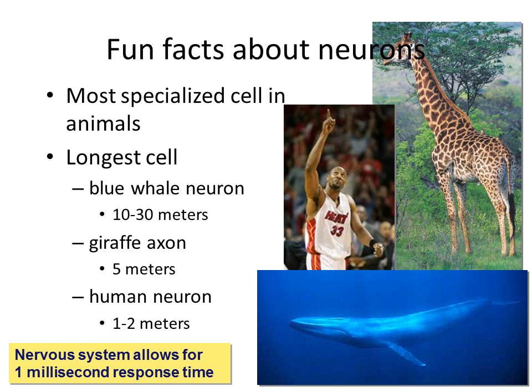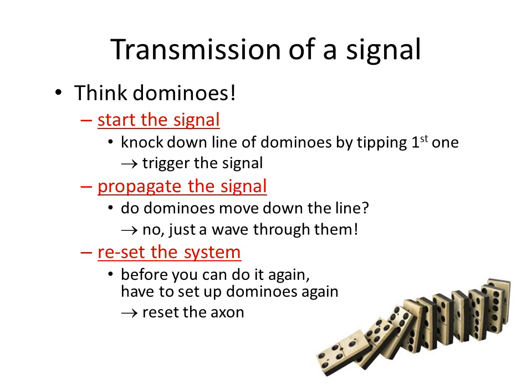The nervous system allows for 1 millisecond of response time, which is extremely fast. So how is the signal transmitted down the neuron? We are going to use dominoes as an analogy. Think about how you knock down dominoes — you first start the signal by knocking down the first one, which is like triggering the signal in a neuron. We are then going to propagate or send the signal down the neuron.